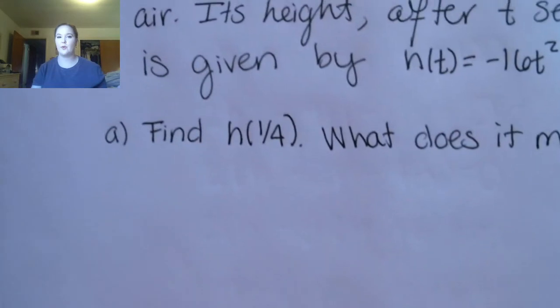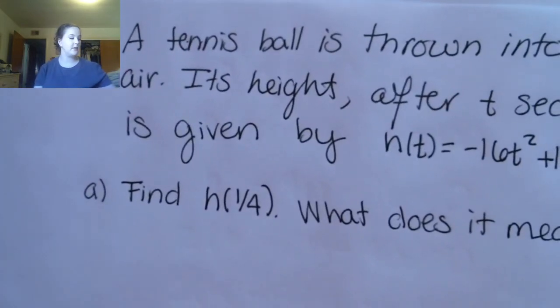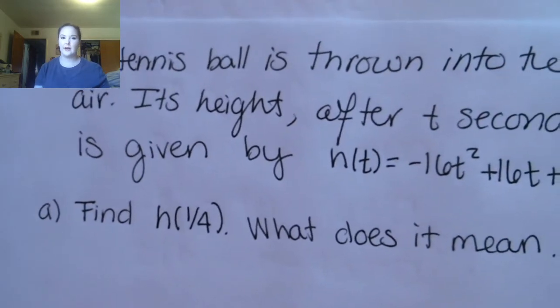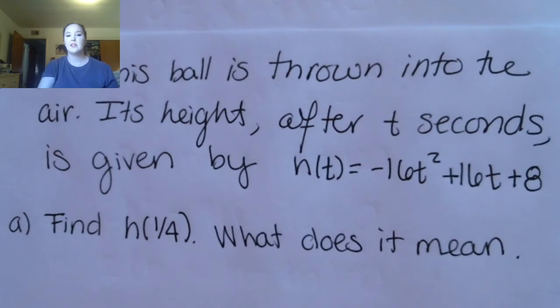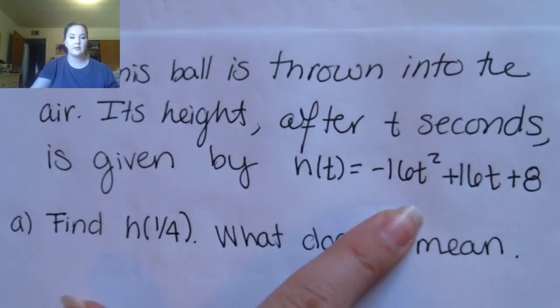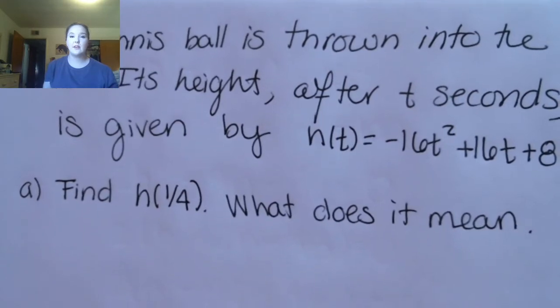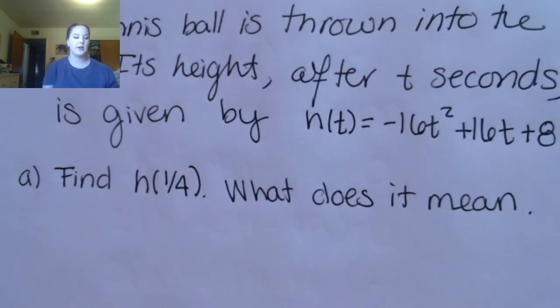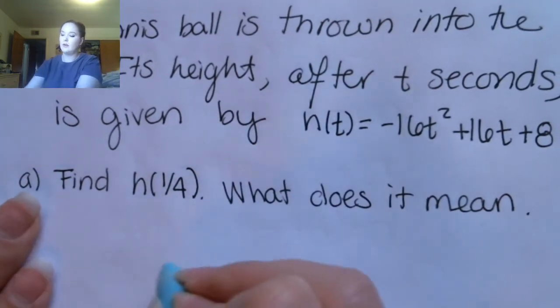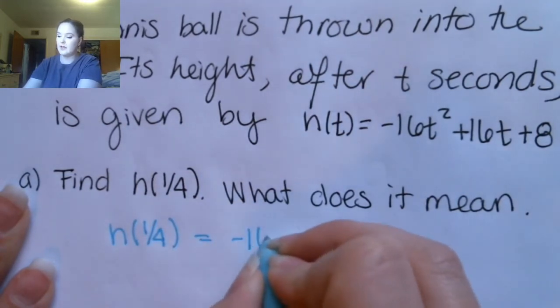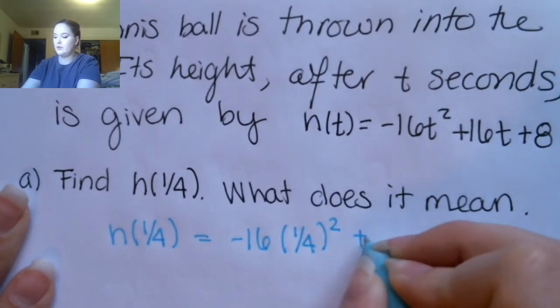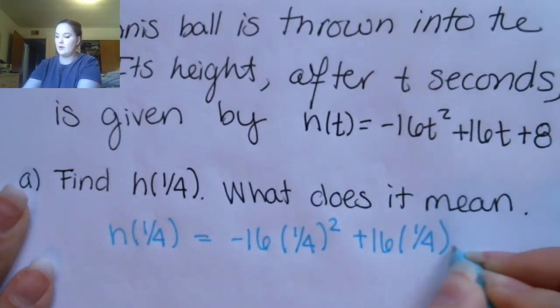Let's look at a slightly different type of word problem with quadratic equations. A tennis ball is thrown into the air; its height after t seconds is given by this equation. This is different because the equation is already given to you. It's in function notation and the questions are also in function notation. Find h(1/4): h(1/4) = −16(1/4)² + 16(1/4) + 8.